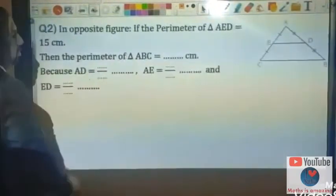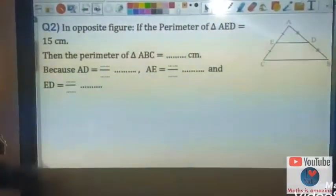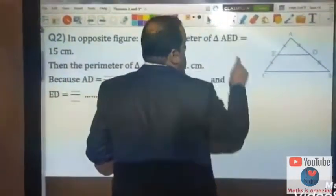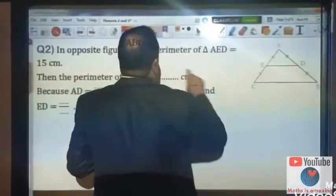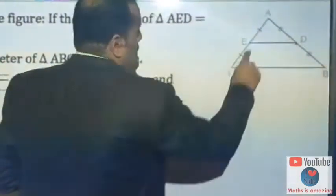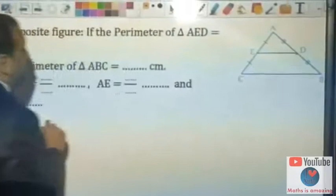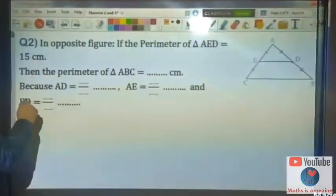Here D is the midpoint and E is the midpoint. ED is the line segment joining between two midpoints. Then ED...